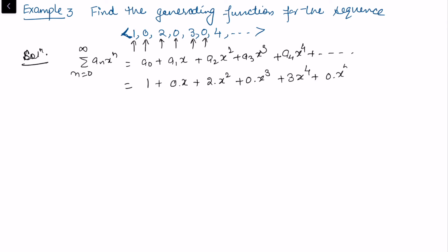Then 3 times x⁴, 0 times x⁵, 4 times x⁶, and so on. So the series is 1 + 2x² + 3x⁴ + 4x⁶ + ...